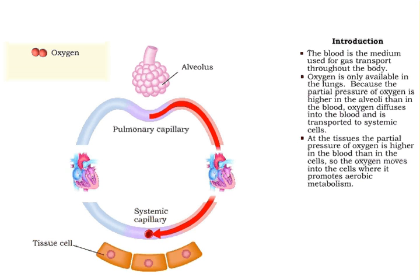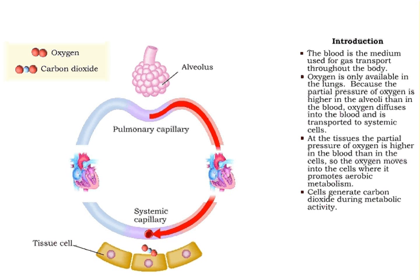At the tissues, the partial pressure of oxygen is higher in the blood than in the cells, so the oxygen moves into the cells where it promotes aerobic metabolism. Carbon dioxide is generated in cells as a metabolic waste product and accumulates in the tissues, and must be carried to the lungs where it can be removed from the body.